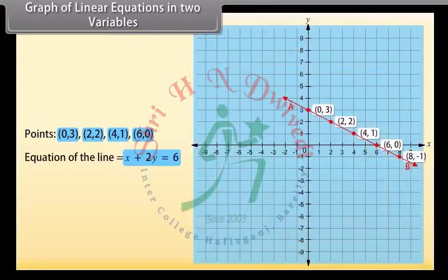This is called the graph of the linear equation. So to obtain the graph of a linear equation in two variables, it is enough to plot two points corresponding to two solutions and join them by a line.